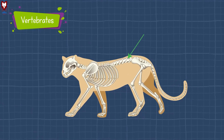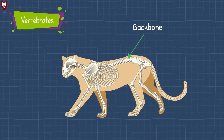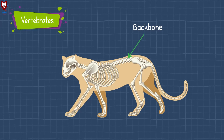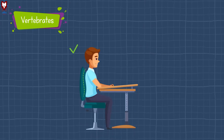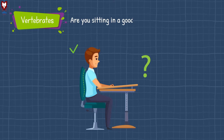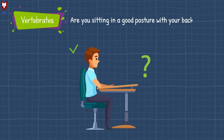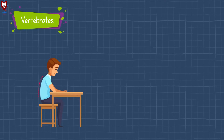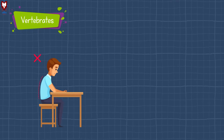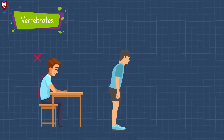Because of the backbone, the body of these animals stays straight. Are you sitting in a good posture with your back straight? If you are not sitting with your back straight, then straighten up — because your backbone helps you maintain that posture.